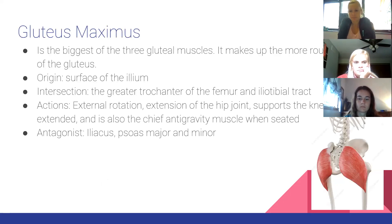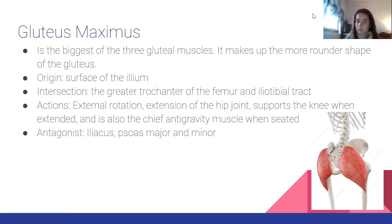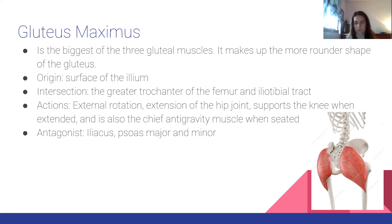The gluteus maximus is the biggest of the three gluteal muscles and makes up most of the rounded shape of the glutes. Origin: surface of the ilium. Insertion: greater trochanter of the femur and the iliotibial tract. Actions: external rotation, extension of the hip joint, supports the knee when extended, and is the chief anti-gravity muscle when seated. Antagonist: iliacus and psoas major and minor.